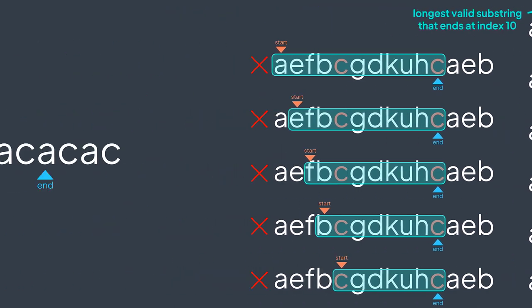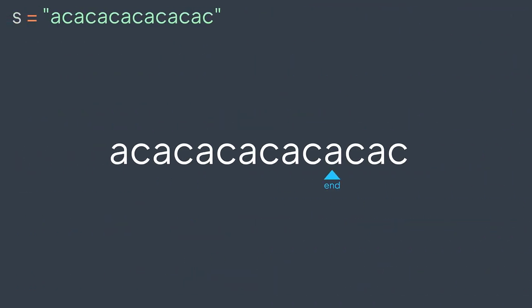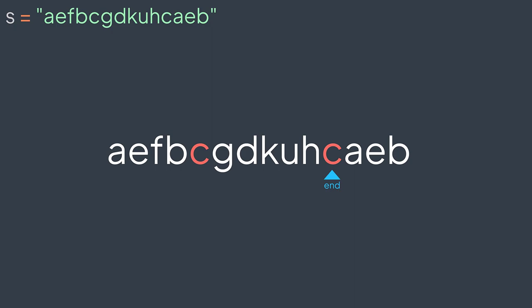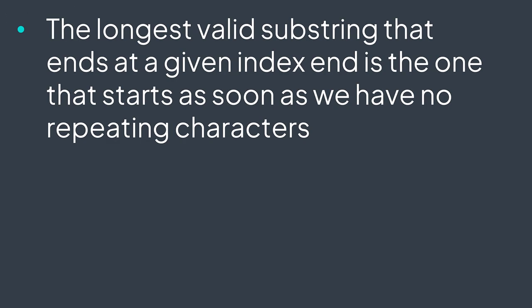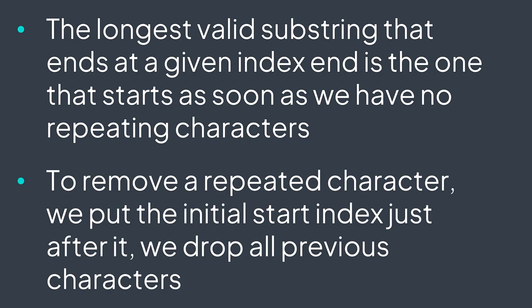What if we had multiple repeated characters? We can make sure to not have more than one repeated character. Every time we find a new repeated character, we eliminate it. At index 10, we find the second instance of the letter C. It means all substrings that include both instances of C won't be considered valid — it's useless to traverse them. So from now on, we directly start just after C and drop all previous characters, because starting in one of them gives an invalid substring.